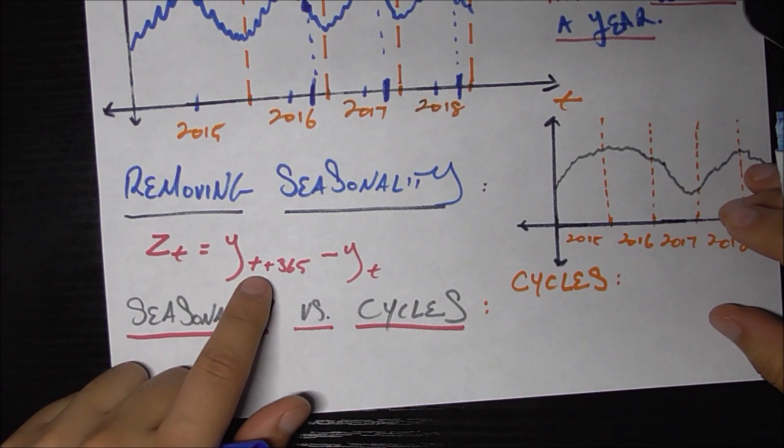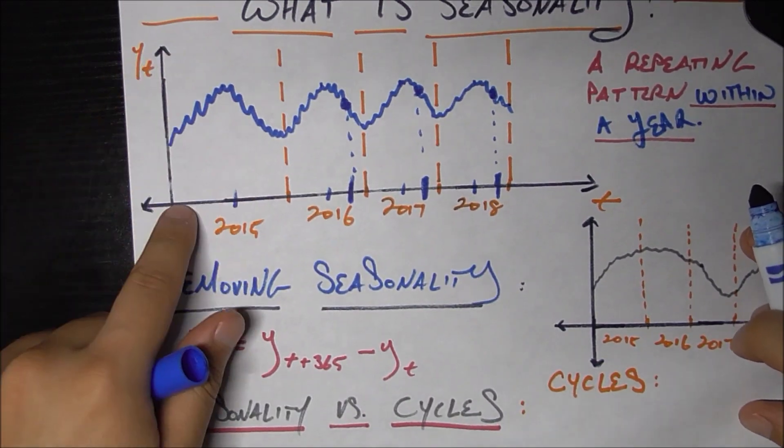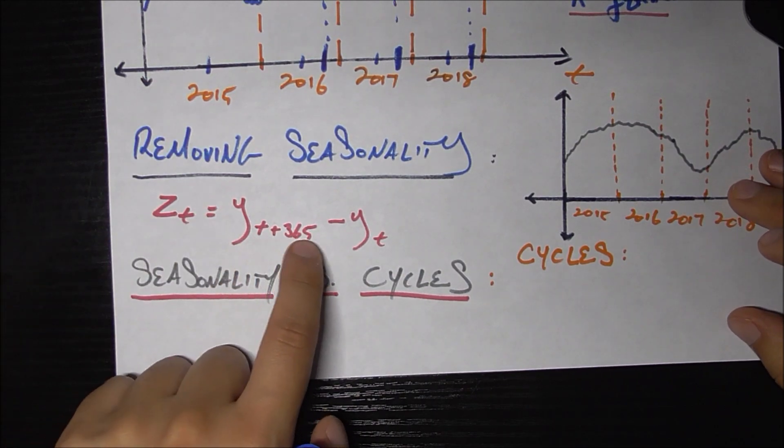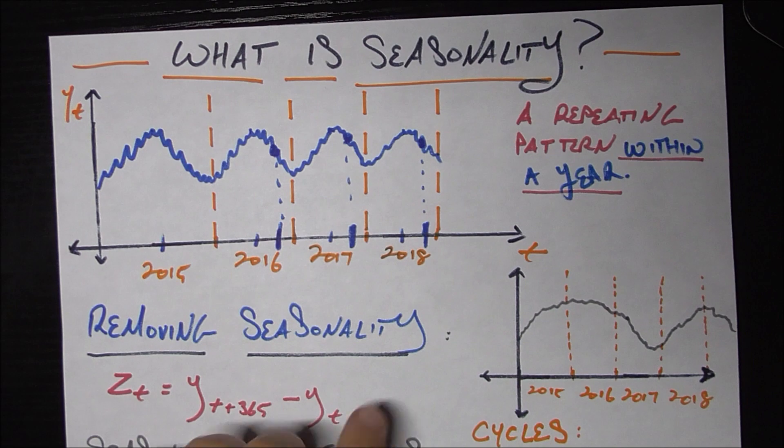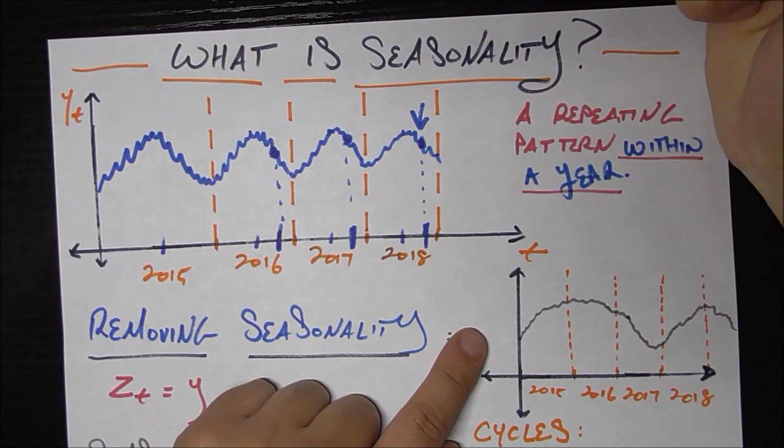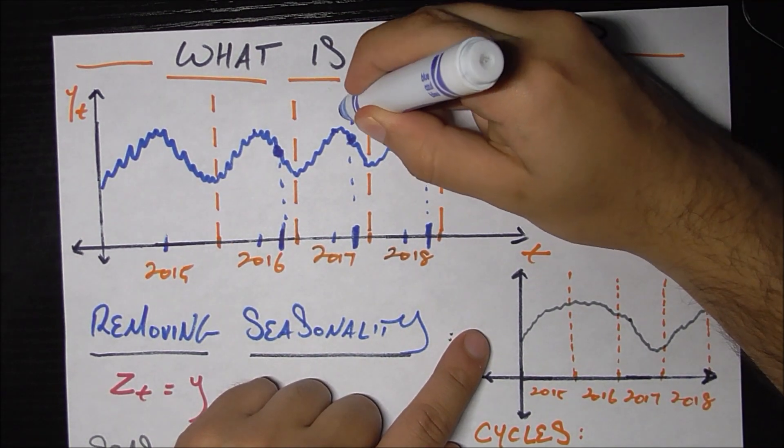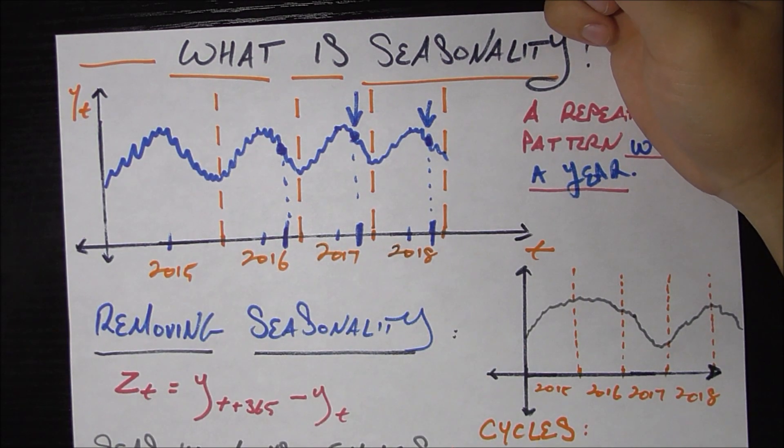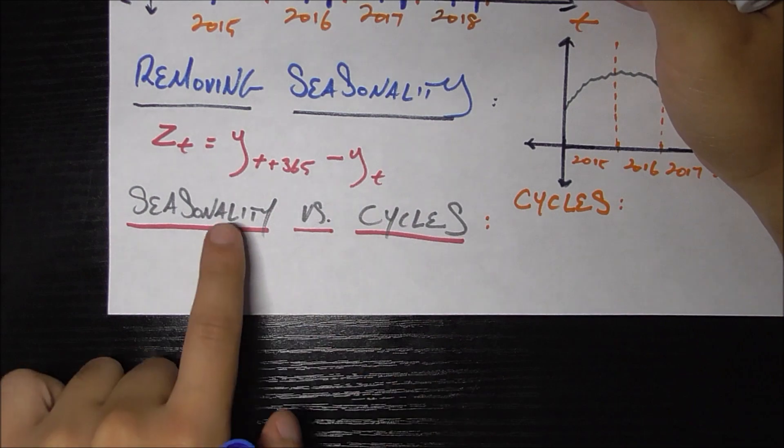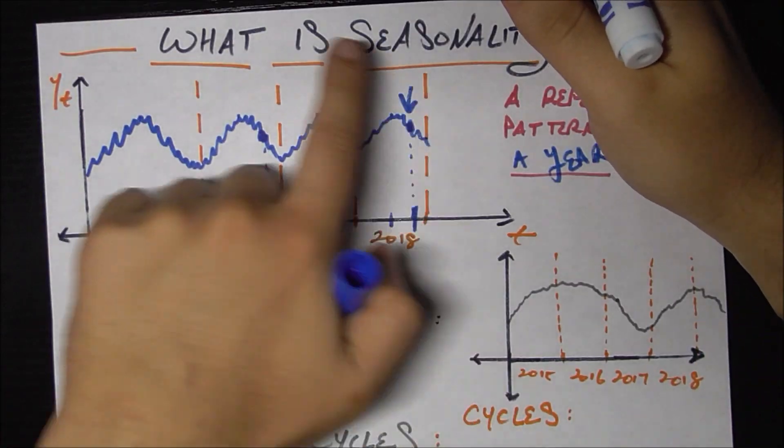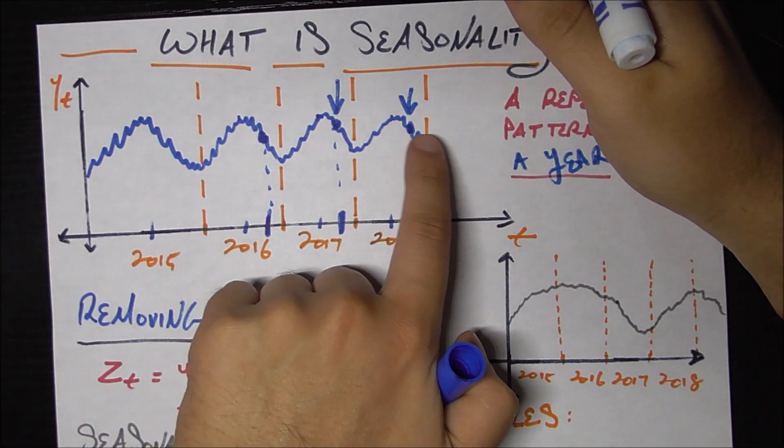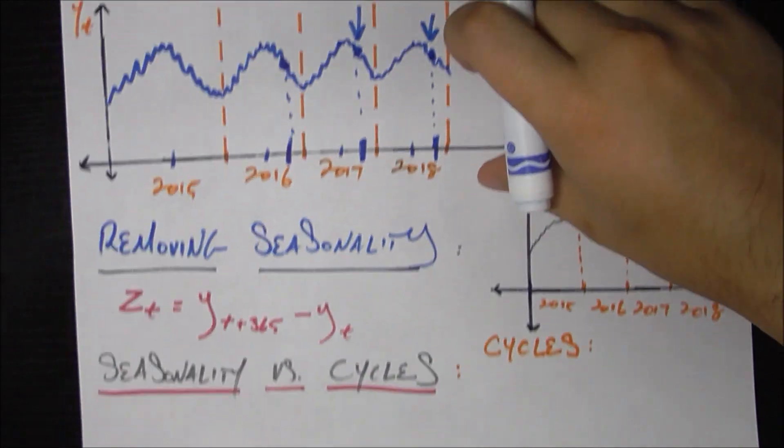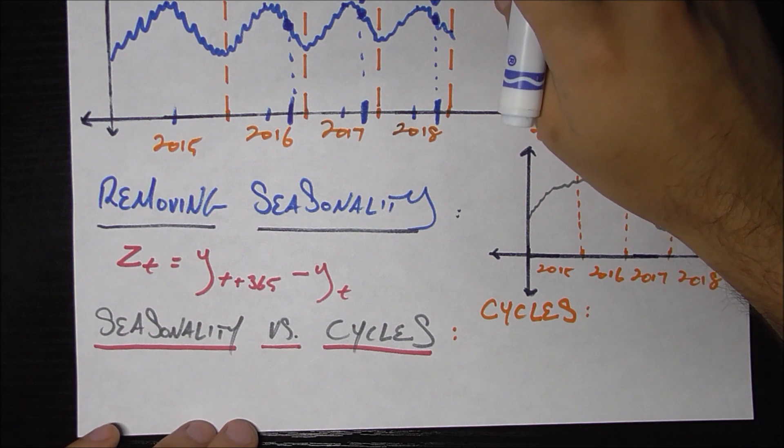So if I transform my time series, instead of having Y, which is the time series itself, if I do Y at T plus 365 minus Y sub T, what that basically means is I'm taking this value, and from it, I'm subtracting the value that was 365 days ago, then I'll be able to eliminate the seasonality because my new series is basically just taking that original time series and getting and matching up point by point, these values so that I'm getting rid of the seasonal component. Hopefully that makes sense to you.